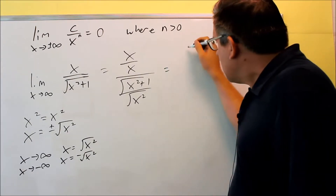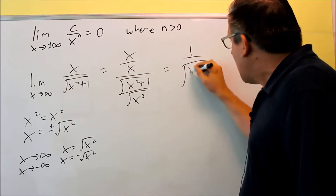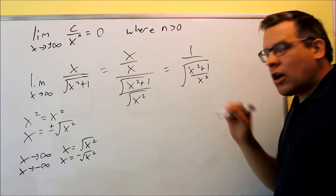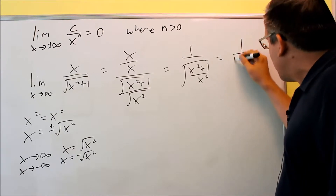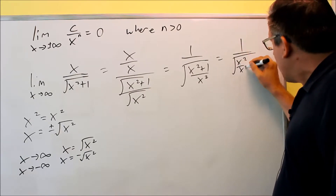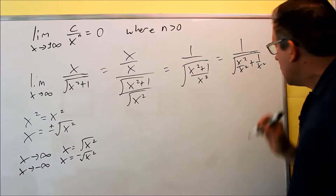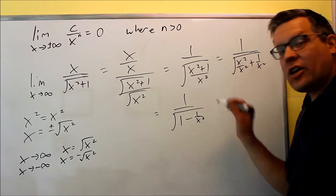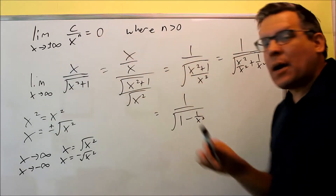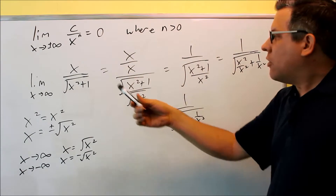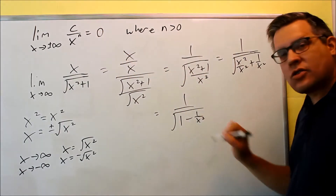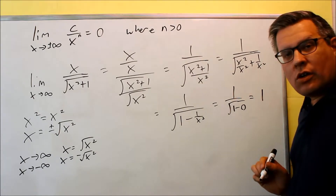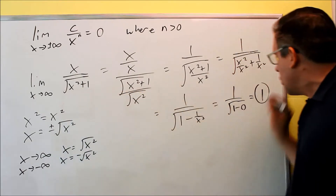By doing that, I can simplify further. The top one's going to be one, and on the bottom I'm allowed to put that all underneath one square root. I can combine it all together into a single one, which allows me to do some more simplifying. I have square root of x squared over x squared plus one over x squared — I want to separate those. And then I'm going to get one over the square root of one minus one over x squared. Finally, as x goes to infinity, a number over x to the power of n goes to zero, so I get one over the square root of one minus zero, which gives me one. The whole entire answer for this one is one.